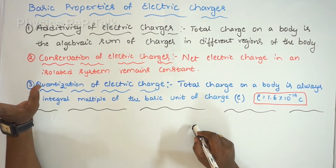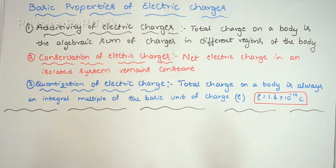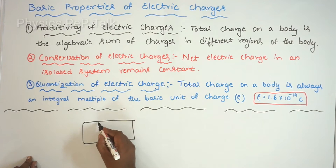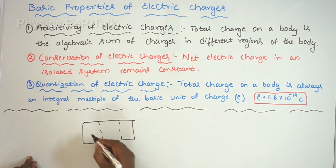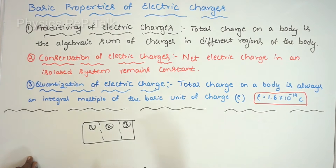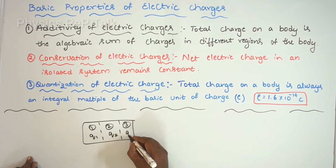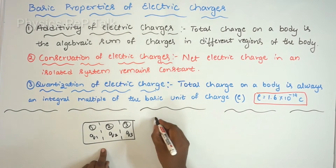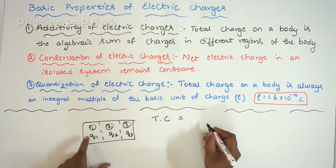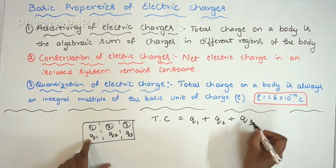Additivity of electric charge: the total charge on a body is the algebraic sum of charges in different regions of the body. Consider a body divided into region 1, region 2, and region 3, having charges Q1, Q2, and Q3 respectively. The total charge on this body is equal to Q1 plus Q2 plus Q3.